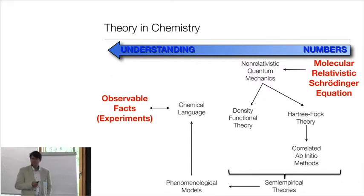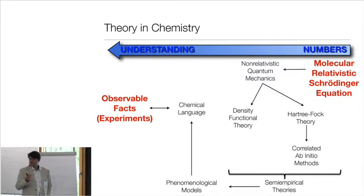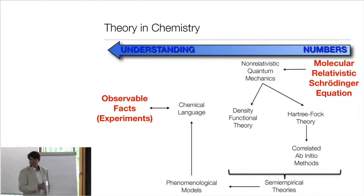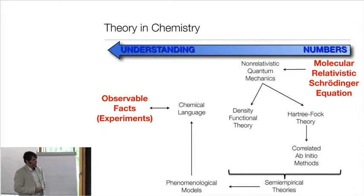All of these phenomenological models belong to effective Hamiltonians. Some have a very clean connection to the rigorous apparatus; others, like pi theory, don't have a very clear-cut connection. Whatever they are, these phenomenological models help us think chemistry, talk chemistry, and develop concepts. They shouldn't be dismissed because they don't produce accurate numbers, but praised because they bring order and meaning to chemistry.